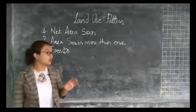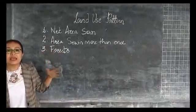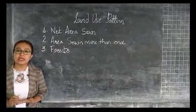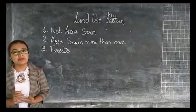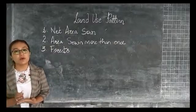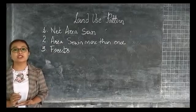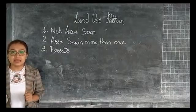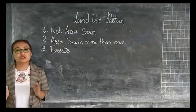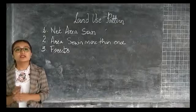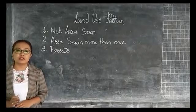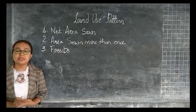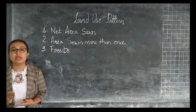The next category is forest. Forest area has increased considerably from 40.48 million hectares in 1950-51 to 70.02 million hectares in 2011-12. However, 22.89% of the forest land in the total reporting area is not sufficient for a tropical country like ours, that is India, where about 33% of the total land should be under forest.